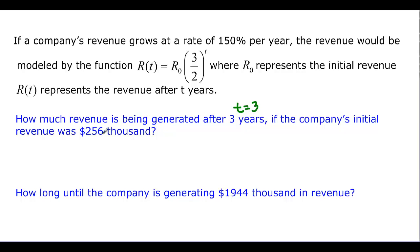If the company's initial revenue was 256,000, so that's R0. So R of 3, because we know that T is 3, will be 256 times 3 over 2, and we know T to be 3. So that's just a plug and chug. And if you plug and chug all that wonderful stuff, you're going to find out that that is $864,000.